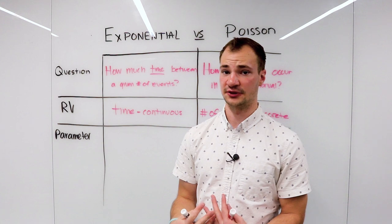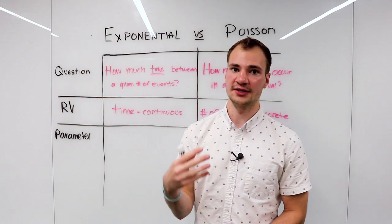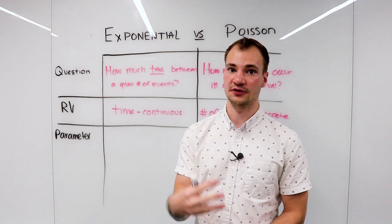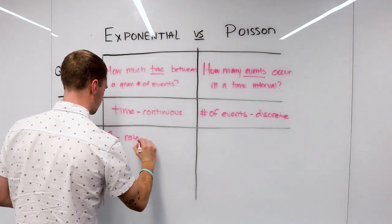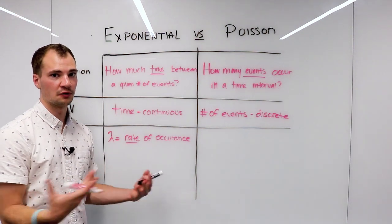So the parameter for the exponential function—in other words, the only thing that the exponential function relies on—is something called lambda, and that represents a rate of arrival or a rate of occurrence. Because it's a rate, we know that the units are going to be one over time. In other words, five customers per minute arrive.